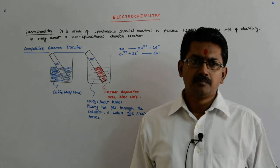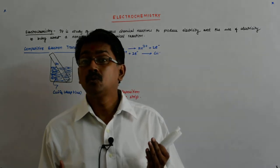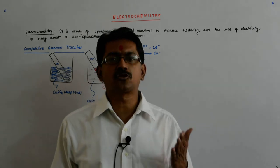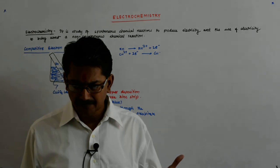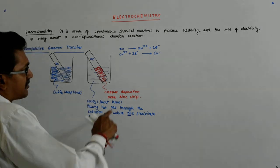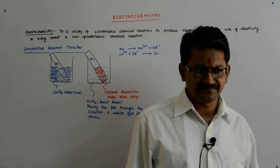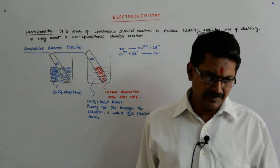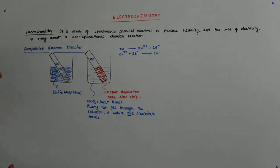Both metals have a tendency to become a positive ion — their tendency is to donate electrons, not to accept them. Still, copper has accepted electrons and Zn has donated electrons. In fact, that Cu²⁺ is more stable than Cu.